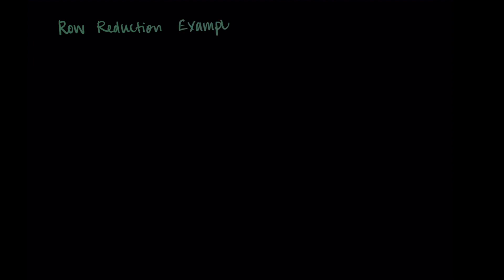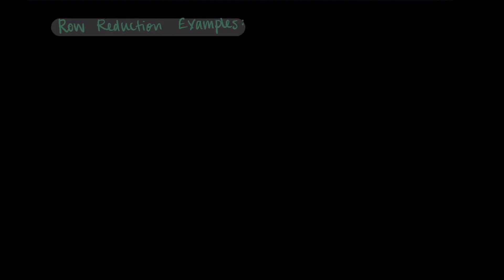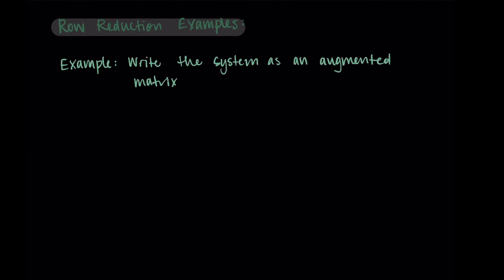Hi and welcome. In this video we're going to work through some row reduction examples. Our task is to write the system we're given as an augmented matrix and then find its reduced row echelon form. I'm going to give us two systems — one in two dimensions and one in three dimensions, that's one with two variables and one with three variables.